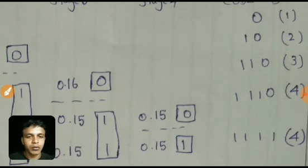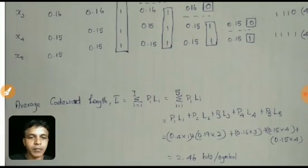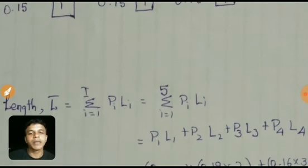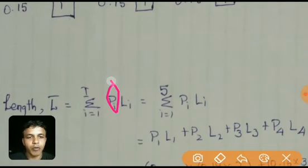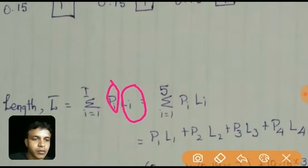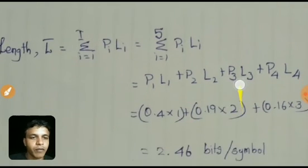The next step is to find the average codeword length. The formula is the summation from i equals 1 to n of p_i multiplied by l_i, where p_i is the probability and l_i is the corresponding codeword length. Expanding this formula gives p1·l1 + p2·l2 + p3·l3 + p4·l4 + p5·l5.